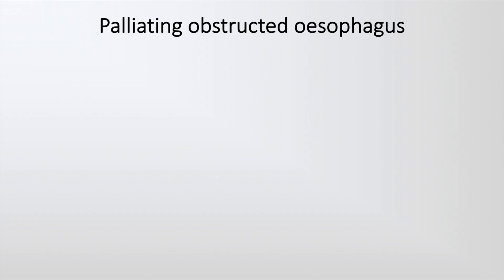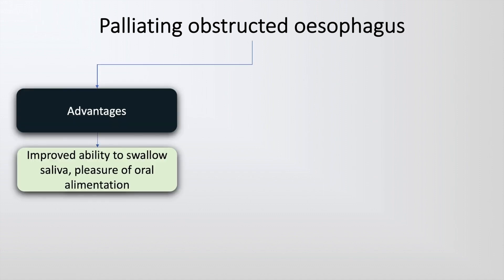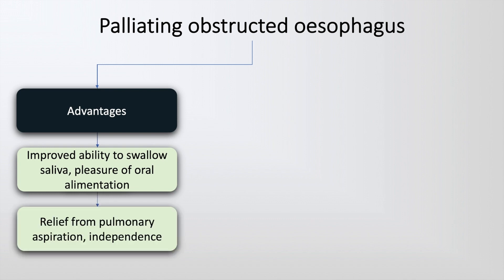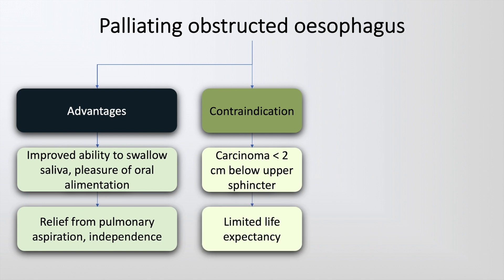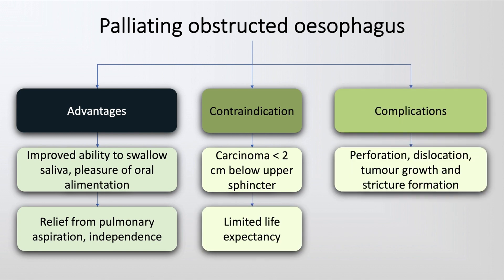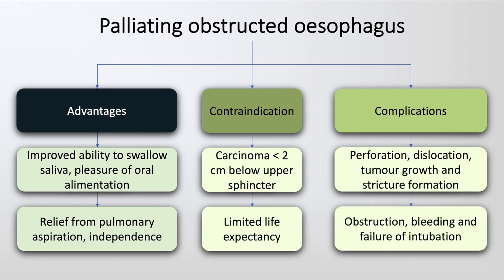Palliating the obstructed esophagus is of critical importance. This has the advantages of giving the patient an improved ability to swallow, the pleasure of oral alimentation, and relief from pulmonary aspiration. The contraindications include a carcinoma less than 2 cm below the upper sphincter and a limited life expectancy. Complications include perforation, dislocation and tumor growth, stricture formation, obstruction, bleeding, and failure of intubation.